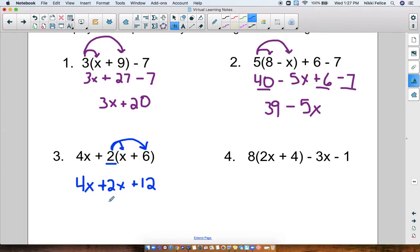Well, 4x plus 2x is 6x. 6x. And then plus 12. And I can't combine those anymore. So that's my final answer. 6x plus 12.